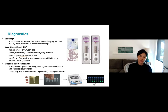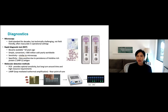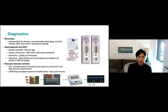The limitations of RDTs are that they have probably similar sensitivity to microscopy, so they don't detect low-level infections, but they are so much easier to use. You get your result back in 15 minutes and don't need reliable electricity or the technical skills to read a blood slide. One issue is that the HRP2 antigen can persist even after you've cleared your infection for several weeks, so you can't use RDTs to confirm clearance — you can get a false positive. That's another limitation.